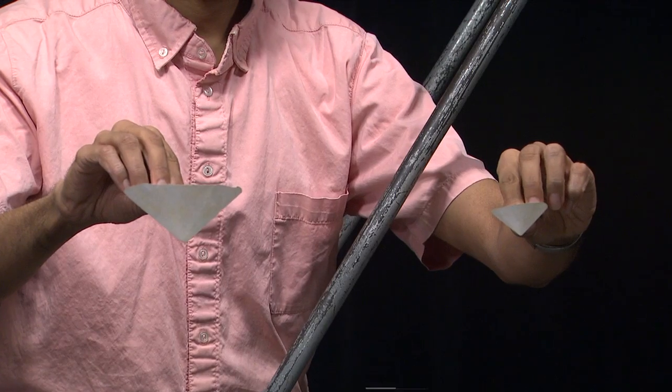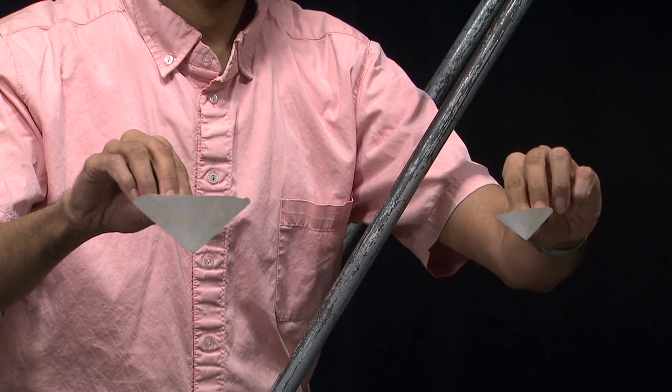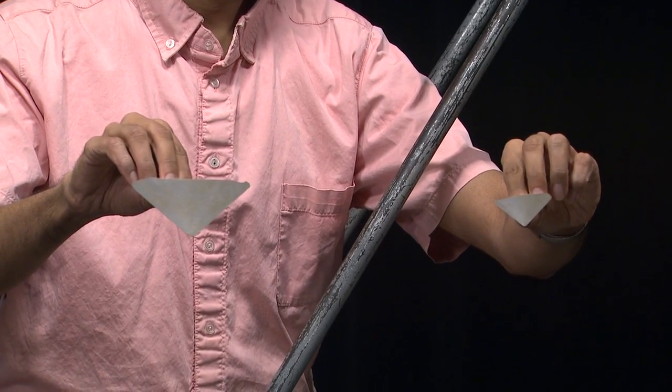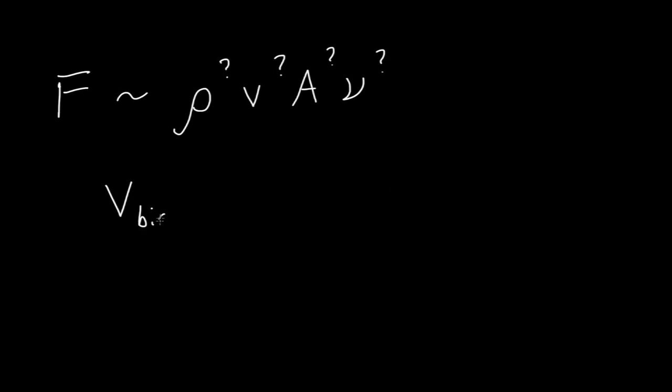Next, we're going to race them, the big cone versus the small cone. But first, make a prediction. The question is, what is the ratio of fall speeds of the big cone and the small cone approximately? Is the big cone roughly twice as fast?